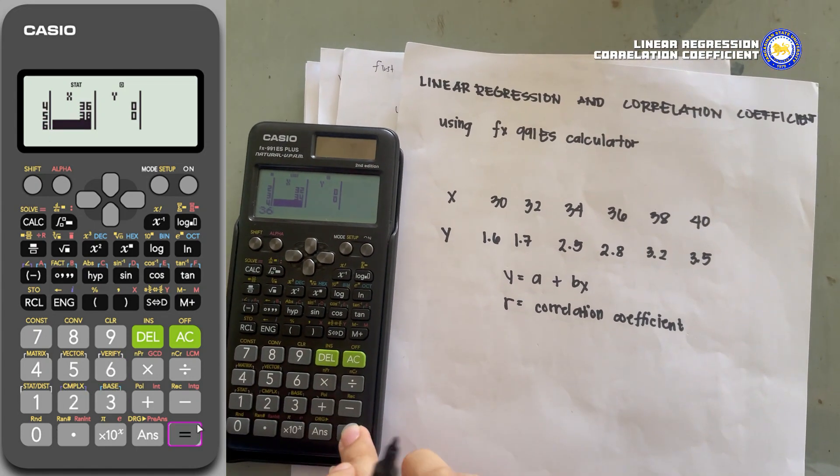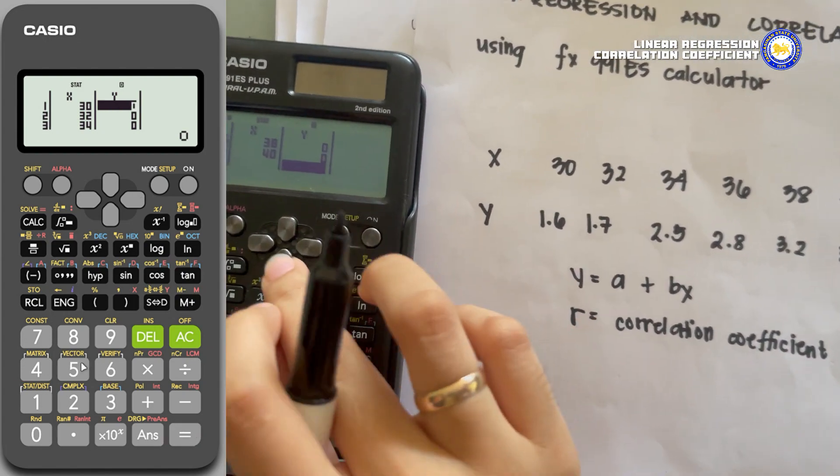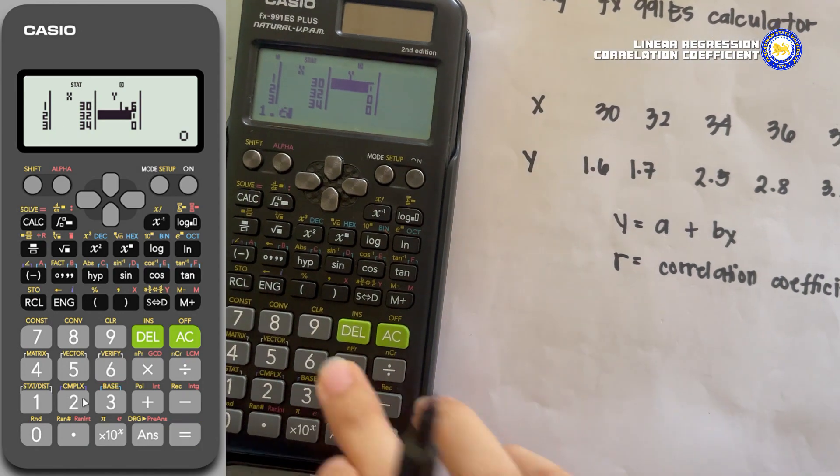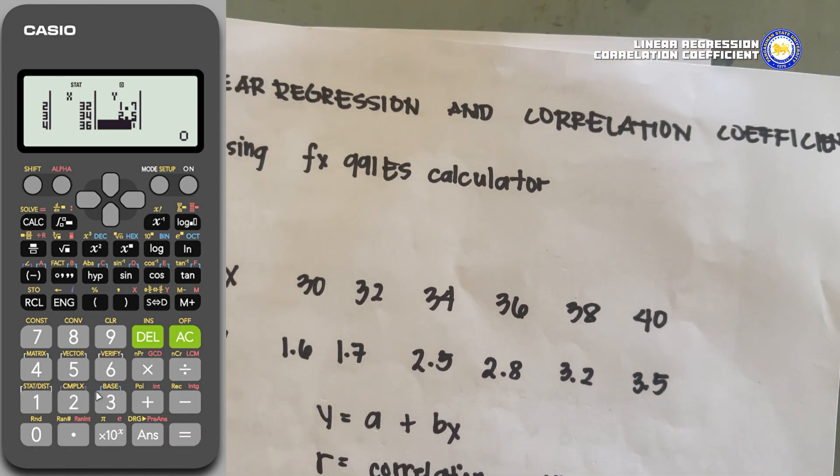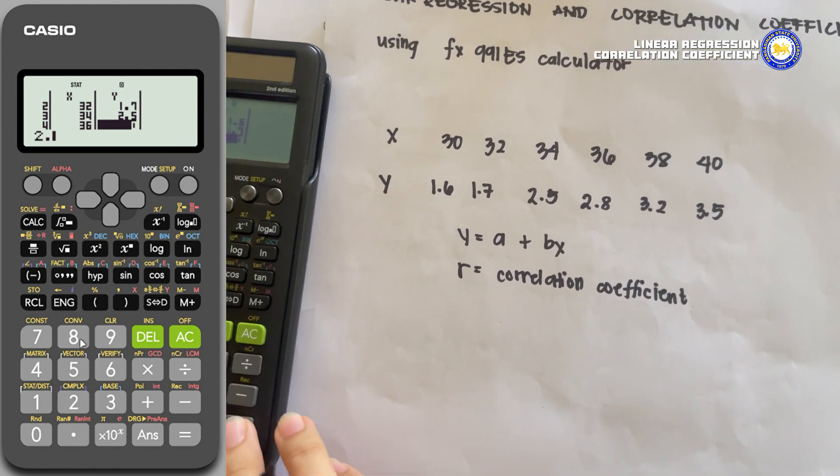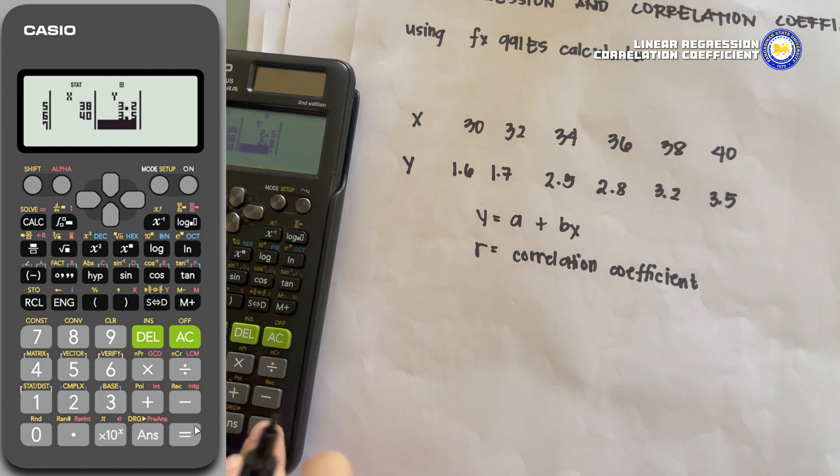For our y values: 1.6, 1.7, 2.5, 2.8, 3.2, and 3.5.